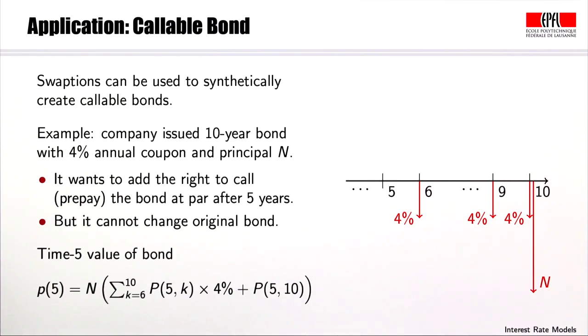Notice that the value of the bond at time 5 is given by the expression here. Formally speaking, this is the same as the notional N plus the value at time 5 of a receiver swap of length 5 years. The company will only call the bond at par, that means at value N, if the value of the receiver swap is positive.